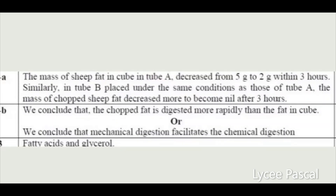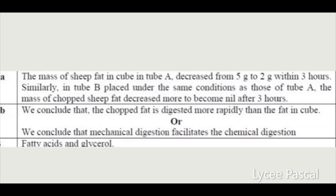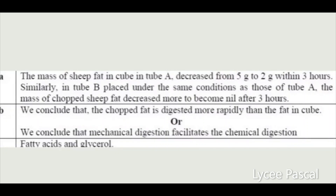We conclude that the chopped fat is digested more rapidly than the fat in cube form. Regarding the second conclusion — that mechanical digestion facilitates chemical digestion — we will understand this once we explain activity number five. The final question asks for the end products of lipid digestion. The end products of lipid digestion are fatty acids and glycerol.